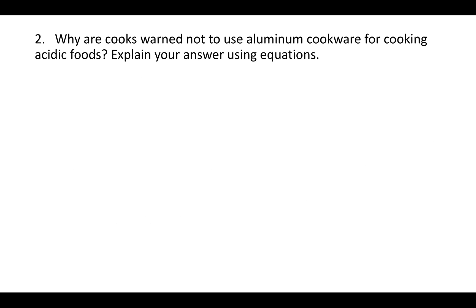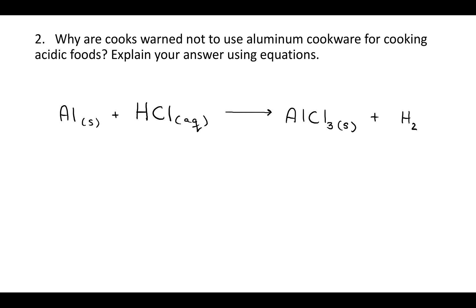For question two, it says: why are cooks warned not to use aluminum cookware for cooking acidic foods? Explain your answer using equations. The general idea is that aluminum is going to dissolve in acid — that acid will react with the chloride that's in your stomach acid. Your stomach acid is HCl, hydrochloric acid. So if you put solid aluminum into that, you get two things: you get aluminum chloride, which is a solid, and you get hydrogen gas. This is the balanced equation for that reaction.